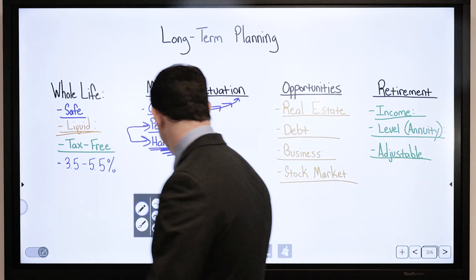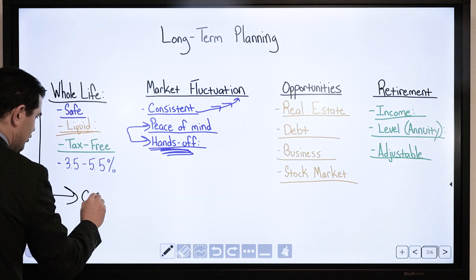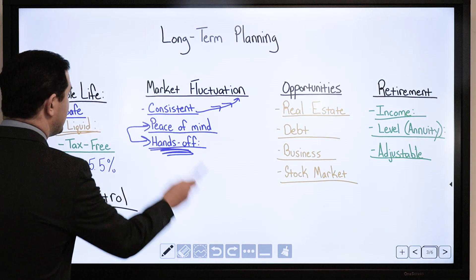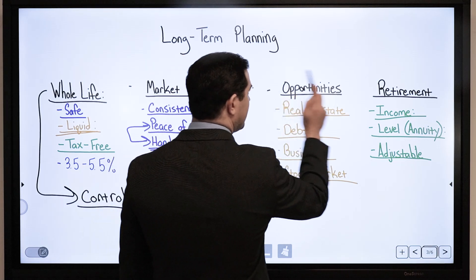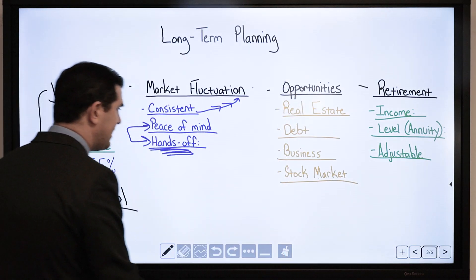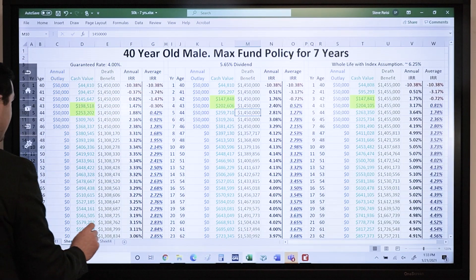One thing I always like to mention with whole life is it gives the consumer control. So let's look at these different options: safe, liquid, tax-free, specifically with the income. Let's look at the safety first.